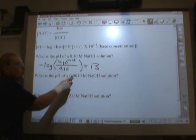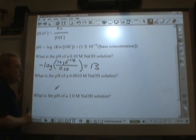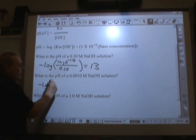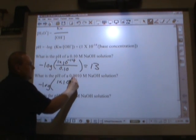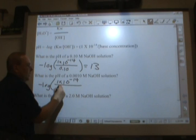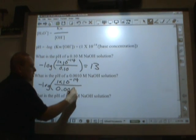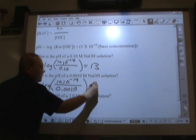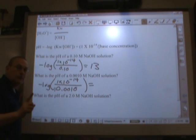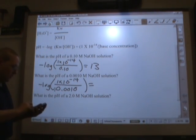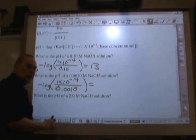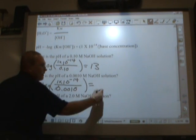To find the pH of a 0.0010 molar NaOH solution, you take the negative log of 1 times 10 to the negative 14th, divided by the base concentration, and that gives you, have you finished trying to calculate it yet? 11.